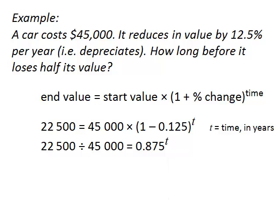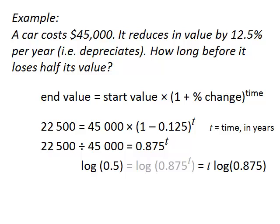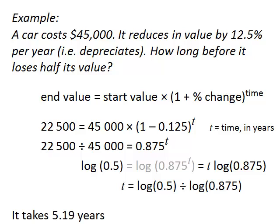And we get our logs out because we've got an unknown that's a power. We log both sides, 22,500 divided by 45,000 is 0.5. That's the half of the value that we were originally starting with. And we move the T outside using our log rules. And we solve it. Gives 5.19. Log 0.5 divided by log 0.875 is 5.19. And that's six years if it's been happening yearly.